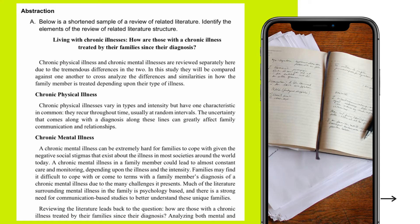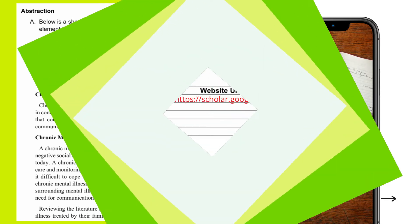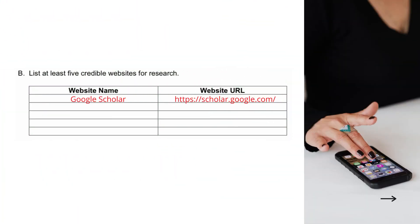Identify the elements of the RRL structure. The title is 'Living with Chronic Illnesses: How are those with chronic illness treated by their families since their diagnosis?' Look for the introduction, the headings and subheadings, and lastly, the synthesis.